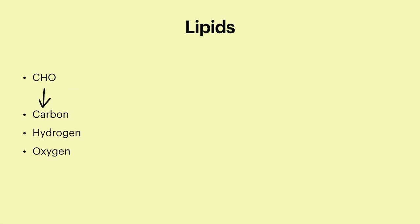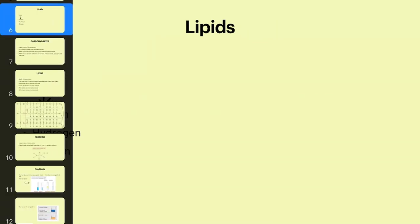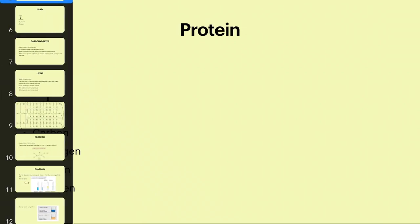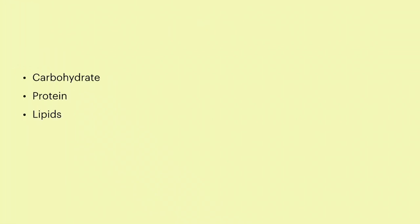Which means lipids include carbon, hydrogen, and oxygen. Carbohydrates include carbon, hydrogen, and oxygen. And proteins include carbon, hydrogen, oxygen, and nitrogen. So this is a good way to remember the order of the elements.